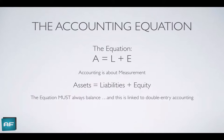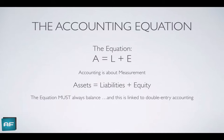The accounting equation is A equals L plus E, or in other words, assets equals liabilities plus equity. Accounting is about measurement, so the accounting equation measures the assets, liabilities, and equity — the three aspects of a business. The accounting equation must always balance. This is linked to double entry accounting. It can never not balance. If it ever doesn't balance, it means there's been a technical error in your accounting process.